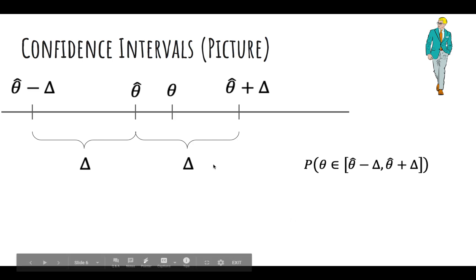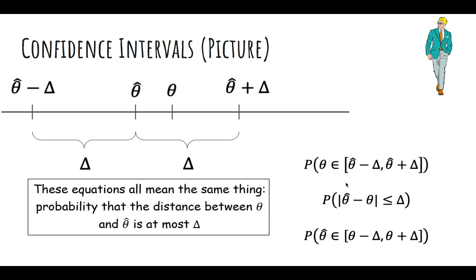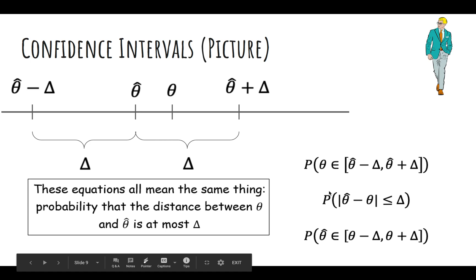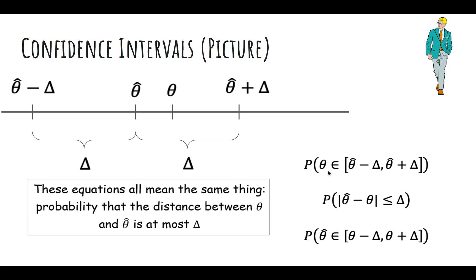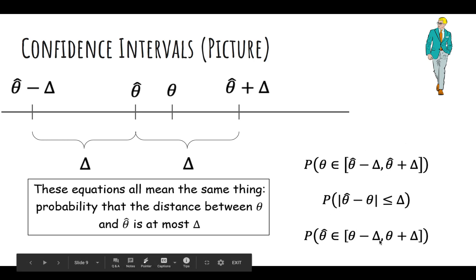Here's a picture. Here's theta hat, here's theta on the real number line. We don't know theta, but we can construct some interval theta hat plus delta, theta hat minus delta, which is this big interval, and we want theta to hopefully fall into it. We might write the probability theta lies in this interval several ways, and they all mean the same thing - that the distance from theta hat to theta is at most delta. These again just mean that our estimate differs from the true value by at most delta.